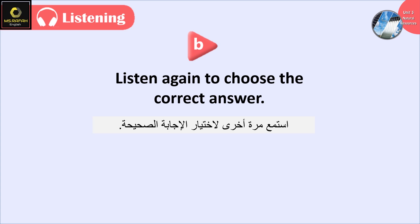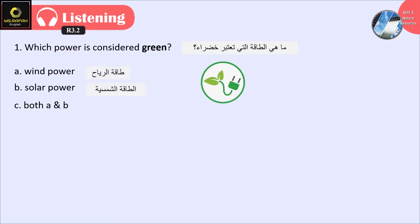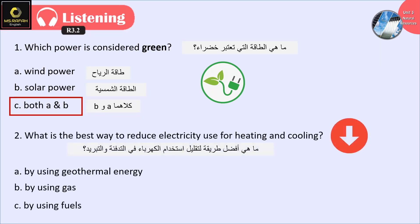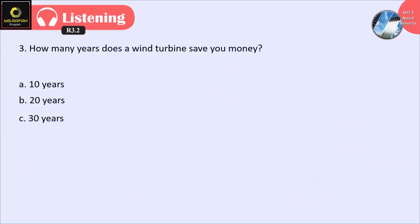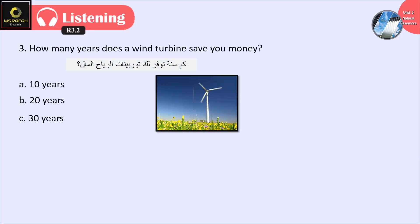Question B: Listen again to choose the correct answer. Which power is considered green? Both A and B: wind power and solar power. What is the best way to reduce electricity use for heating and cooling? By using geothermal energy. How many years does a wind turbine save your money? 20 years.